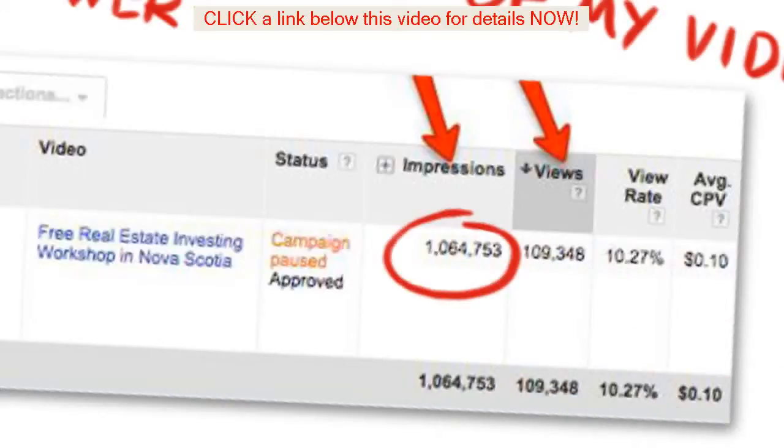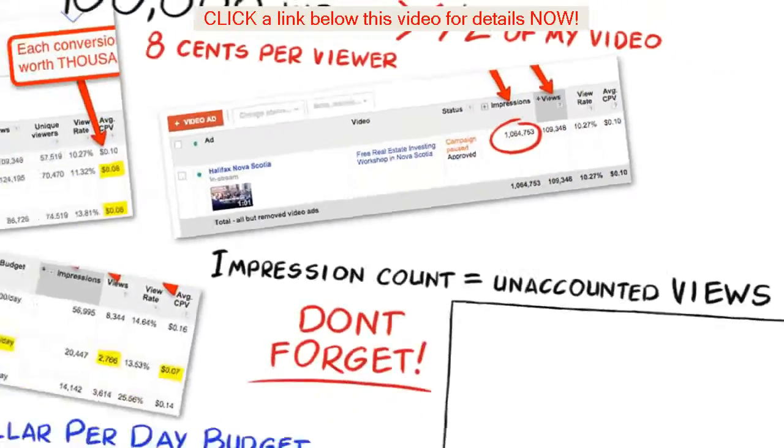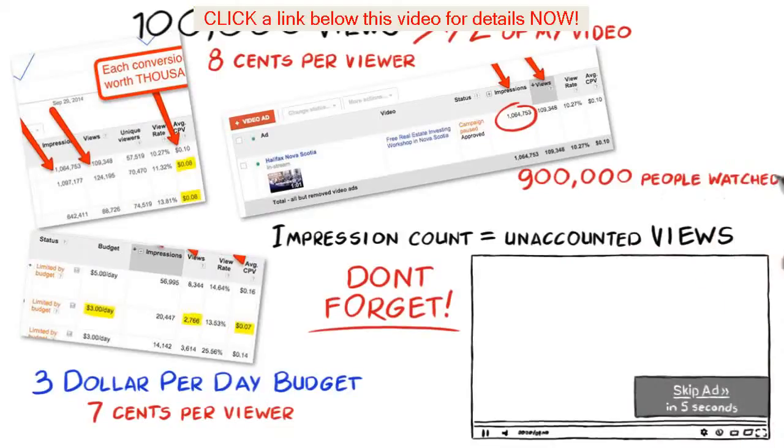We have over 1 million impressions and over 100,000 views, which means 900,000 plus views of people who watched at least 5 seconds or a little less than half of the video. Paid absolutely nothing for these 900,000 views, which are unaccounted views.